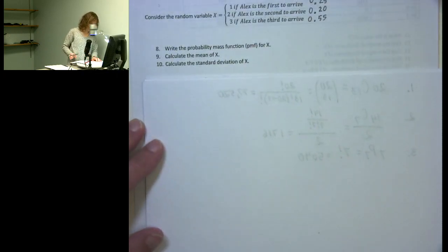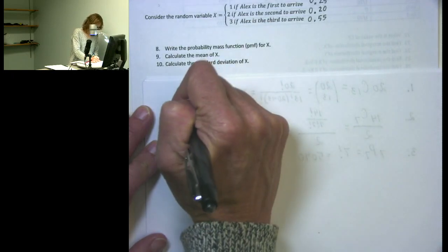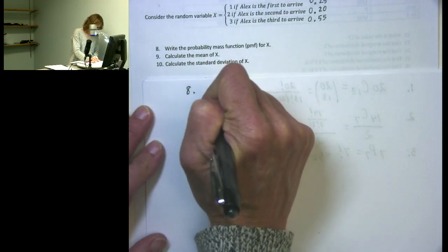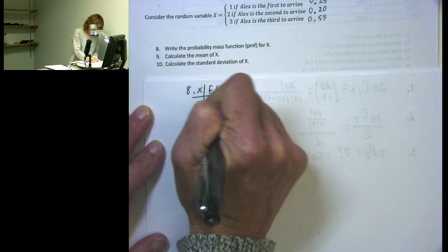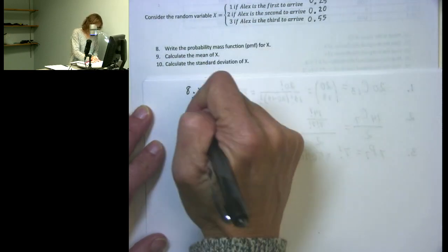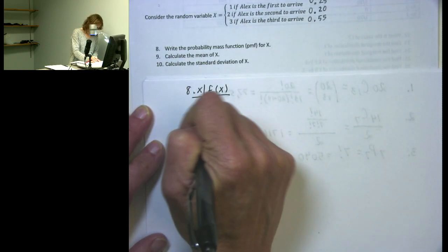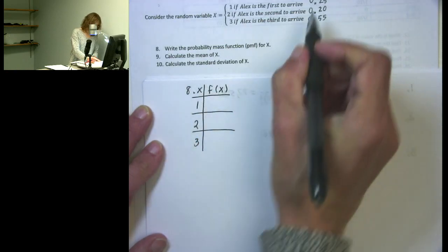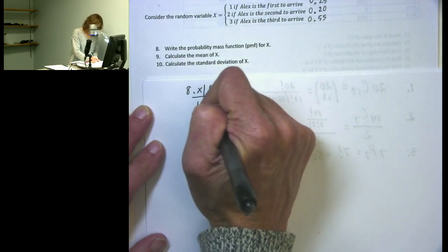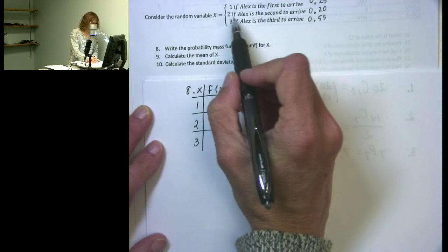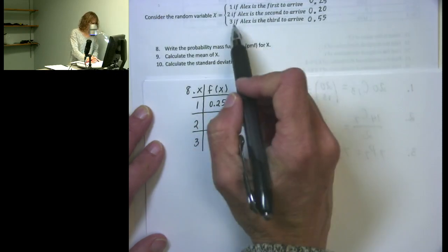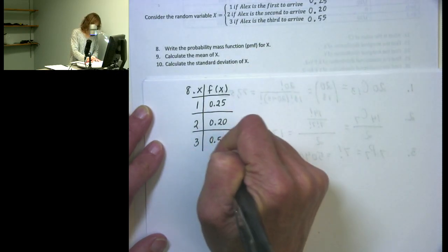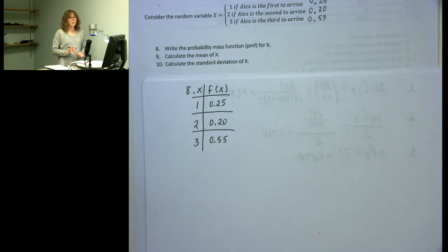So the probability mass function for X, f(x), has three possible values: x=1 with f(1)=0.25, x=2 with f(2)=0.20, and x=3 with f(3)=0.55. That is our probability mass function.